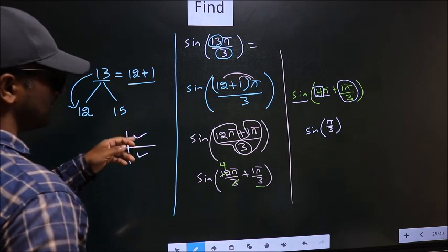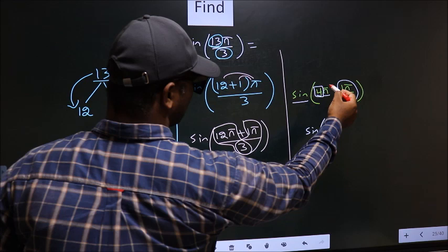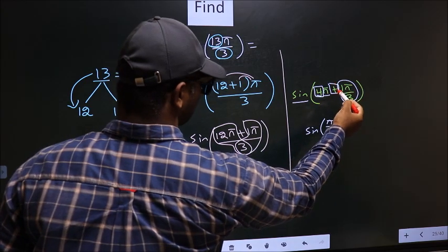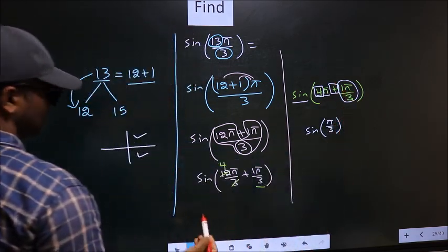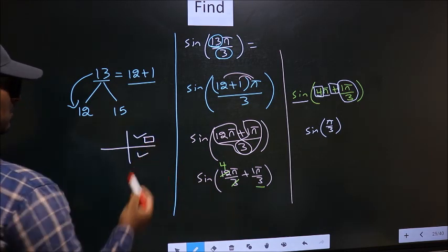Now to decide in which quadrant does the angle lie, you should look at this symbol. Plus. You have plus, that means angle lies in the first quadrant.